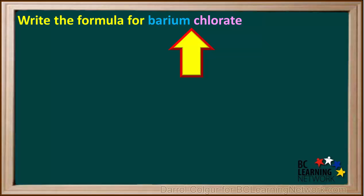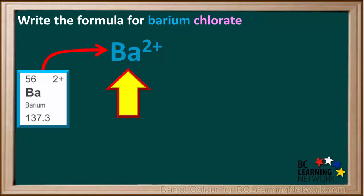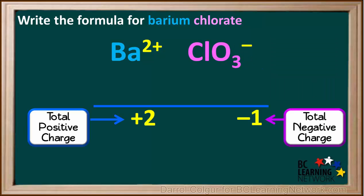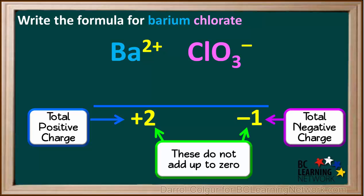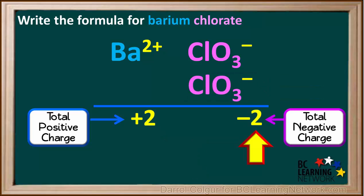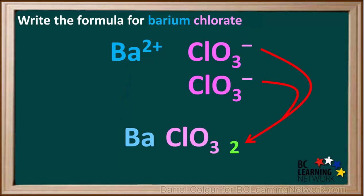We're asked to write the formula for barium chlorate. Looking at barium on the periodic table, we see that it forms a Ba2+ ion. Chlorate is a polyatomic ion on the ion table — its formula is ClO3 with a negative 1 charge. With one barium and one chlorate ion, the total positive charge is +2 and the total negative charge is -1. The charges are not balanced — they do not add up to zero. So we add one more chlorate ion, and the total negative charge is now -2. Now the charges are balanced.